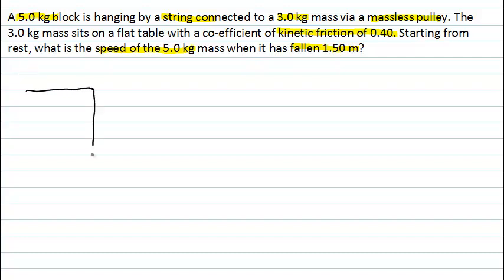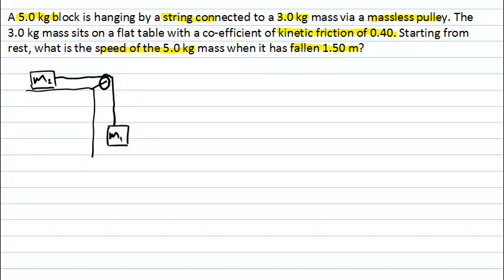Here is our horizontal tabletop with one of the masses resting on it, and here is the other mass hanging down. Let's call this one M1, and the one on top M2, connected by a string over a massless pulley. The pulley being massless is quite important — it means the properties of the pulley are not going to affect the motion, because no forces are required to change its motion.